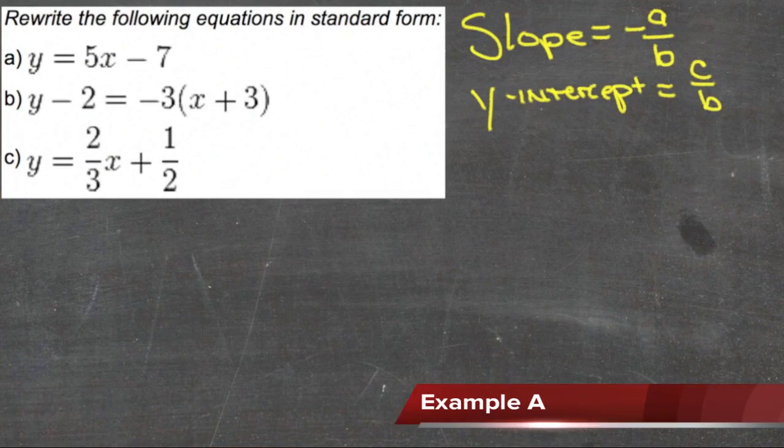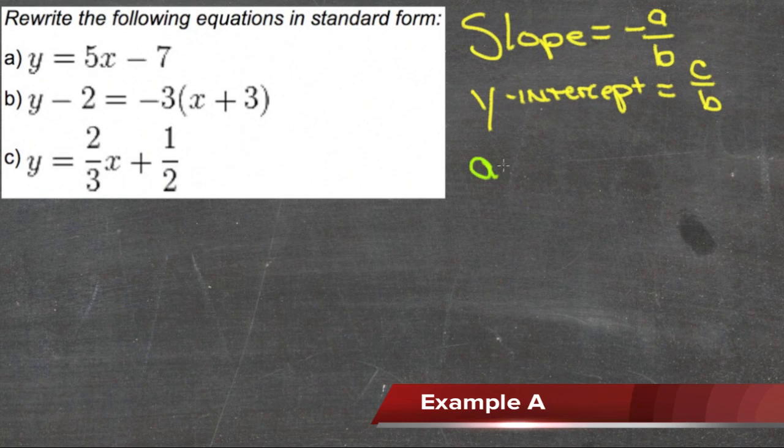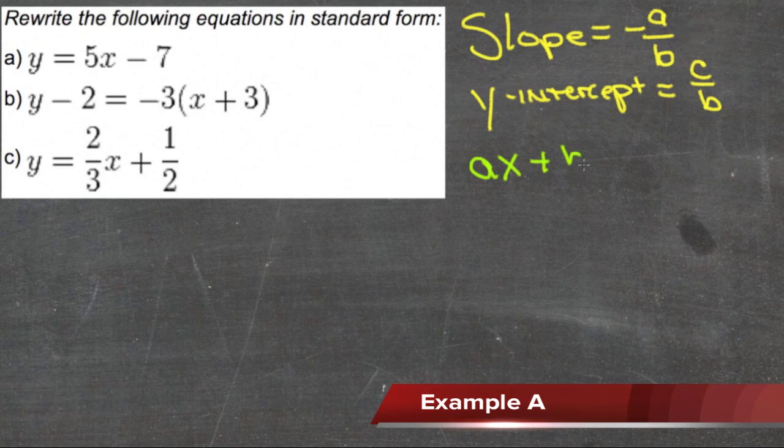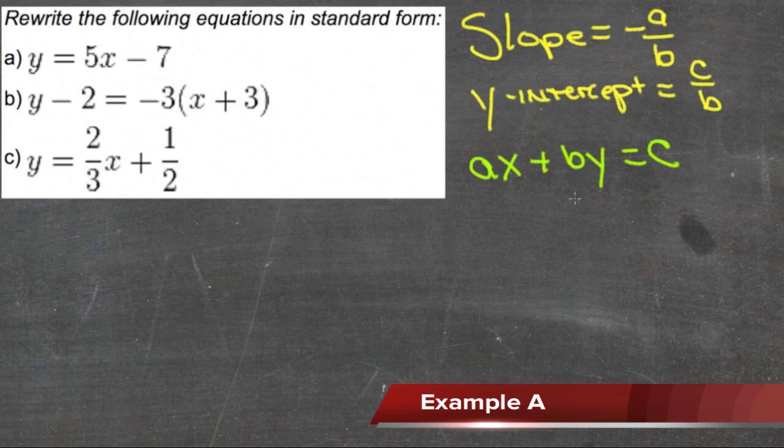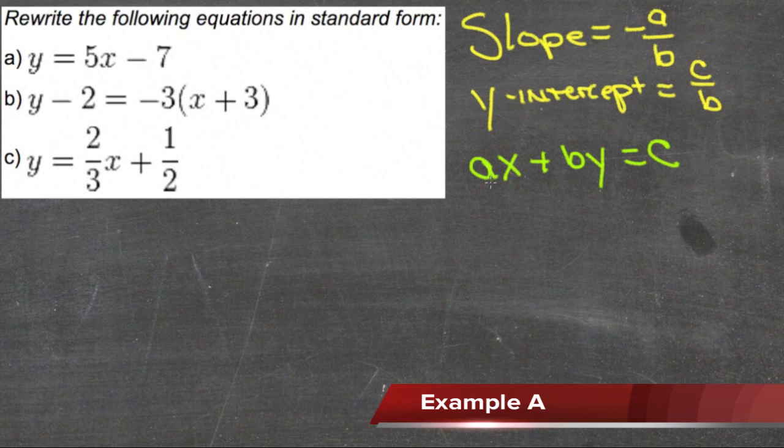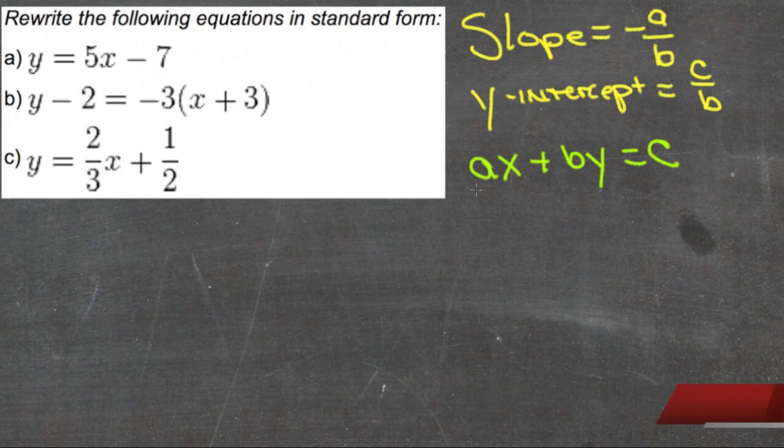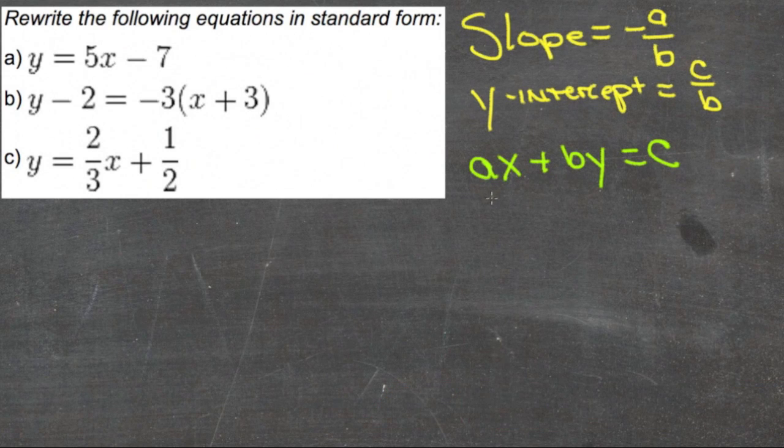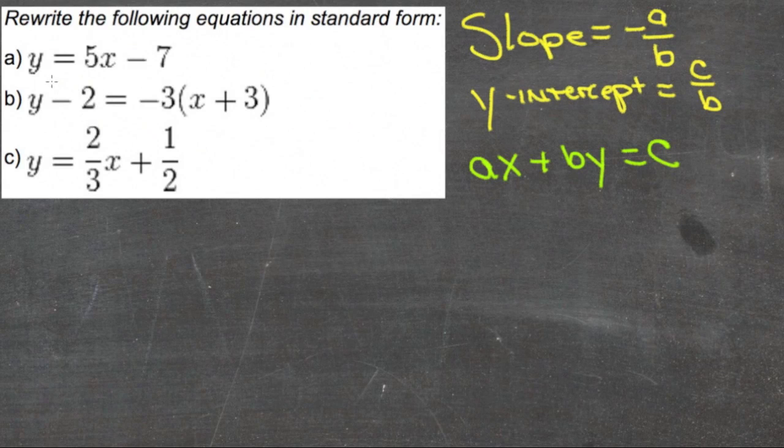To rewrite these equations in standard form, we need some coefficient of x plus some coefficient of y equals some constant. That means x and y are on the same side of the equation, and the coefficient of x is not negative—in other words, it's positive.